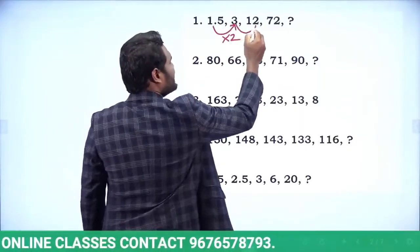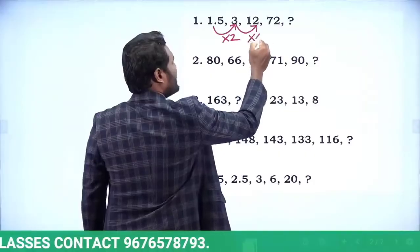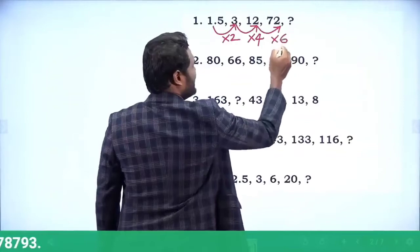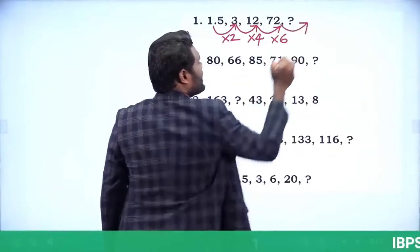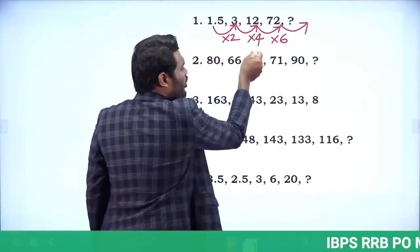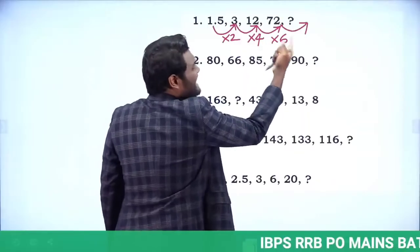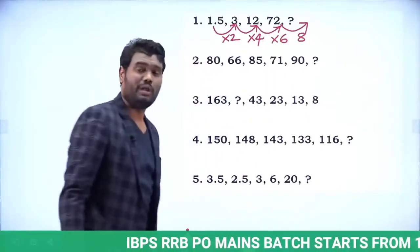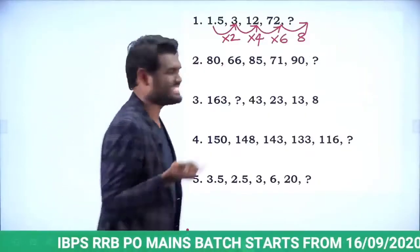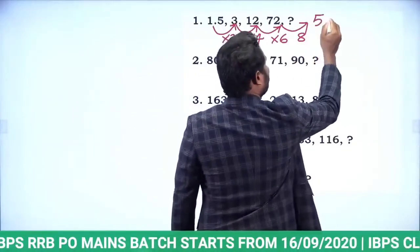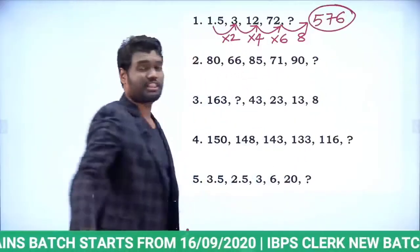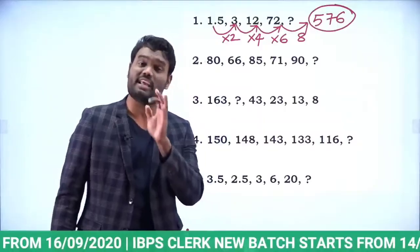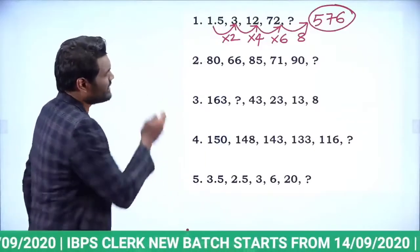Similarly, 3 into 4 is 12, and 12 into 6 is 72. The multipliers are even numbers: 2, 4, 6 — so the next even number is 8. 72 into 8 is 560 plus 16, which is 576. The answer for the first question is 576.